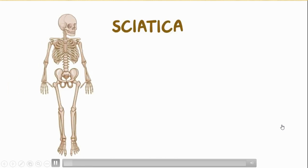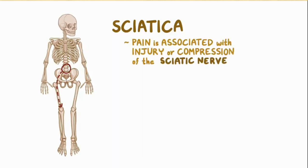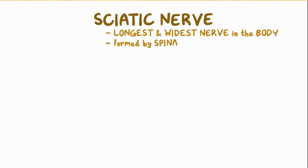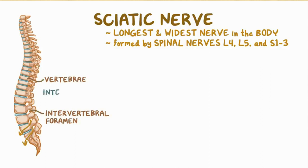Sciatica is a condition where pain starts in the lower back and travels down the leg, associated with injury or compression of the sciatic nerve following its path. The sciatic nerve is the longest and widest nerve in the body. It is formed by spinal nerves L4, L5, S1, S2, and S3, which leave the spinal canal through the intervertebral foramen — an opening located between the vertebrae and behind the intervertebral discs.